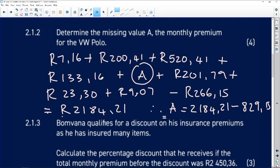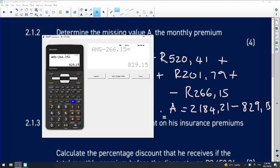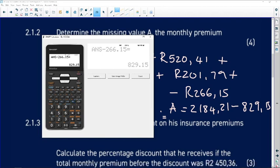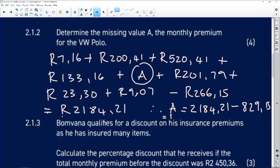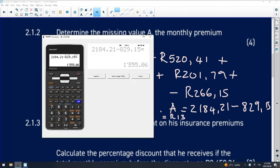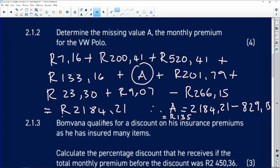Taking R2,184.21 and subtracting R829.15 gives me the value of A. The value of A is R1,355.06.